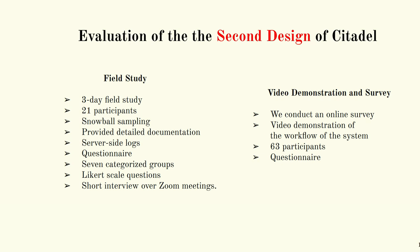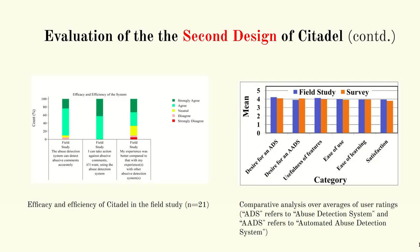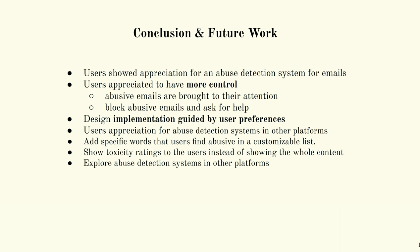We also performed a video demonstration survey where we conducted an online survey with 63 participants by demonstrating a video of the workflow of the system and giving them a questionnaire with six categorized groups of Likert-scale questions. Here you can see the results of the evaluation of the second design of Citadel. We found that users replied positively about the efficacy and efficiency of Citadel in the field study. Through the six categorized groups, users also replied positively in both the field study and video demonstration survey about their desire for an automated abuse detection system.